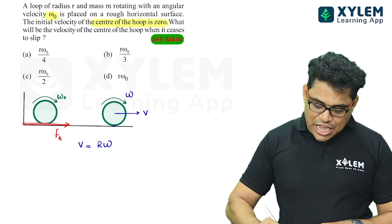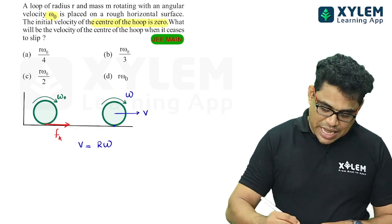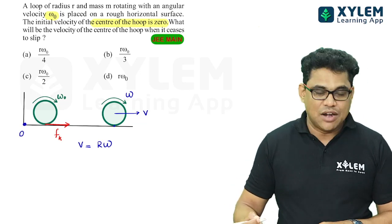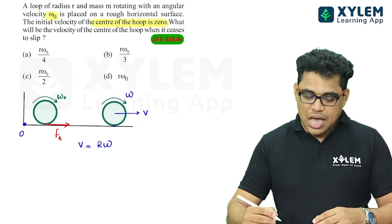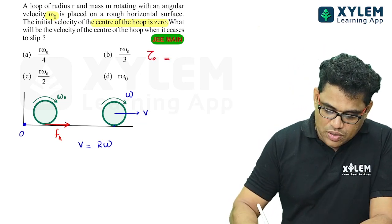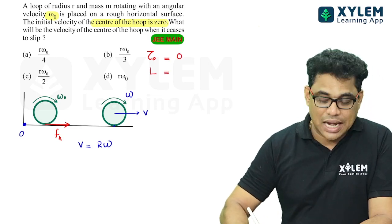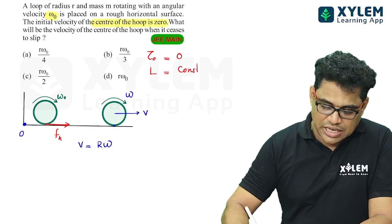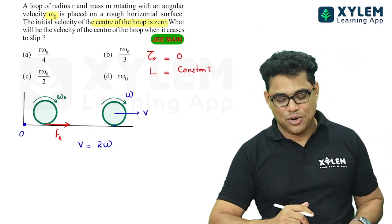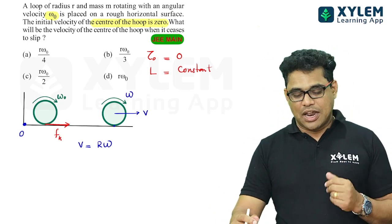In the line of action of kinetic friction, any point on that line has zero torque. That is why I take torque about point O, which lies on the line of action of friction. Torque about O is zero — that is very obvious. Therefore, angular momentum about O is constant. We are going to apply the angular momentum conservation condition: torque about point O is zero, so angular momentum about that point is conserved.